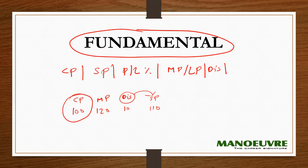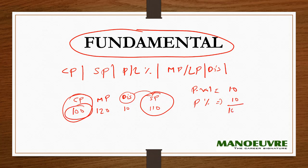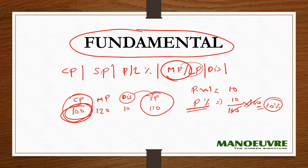So you bought the product for Rs. 100 and sold it for Rs. 110. The profit value is 10, and the profit percent is 10/100 × 100 = 10 percent. Profit or loss percent is always calculated on cost price, and discount is always calculated on the mark price or list price.